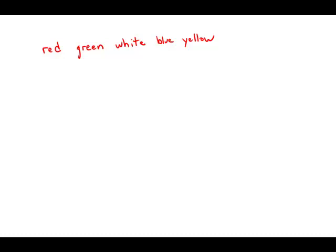A necklace is made by stringing n individual beads together in a repeating pattern: red bead, green bead, white bead, blue bead, and yellow bead. If the necklace design begins with a red bead and ends with a white bead, then n could be which of the following?